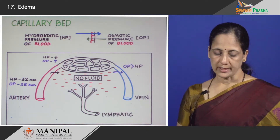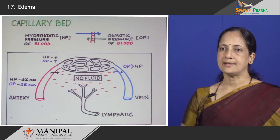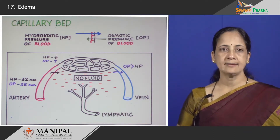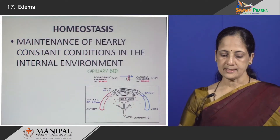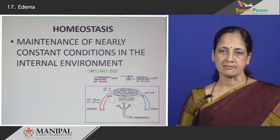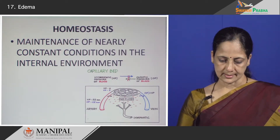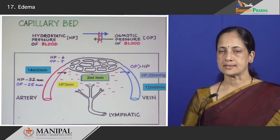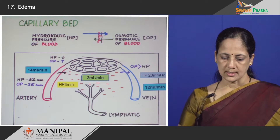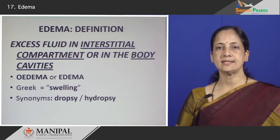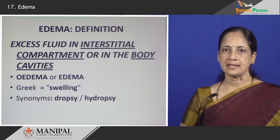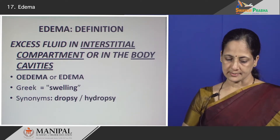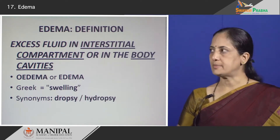So in spite of fluid constantly moving between the compartments, equilibrium is maintained between the intravascular, interstitial, and intracellular compartments — this maintenance of equilibrium in the internal environment is what you learned as homeostasis. How then does an excess of fluid accumulate in the interstitial compartment, and what is it called? This excess of fluid accumulating in the interstitial compartment is known as edema. It can accumulate either in the interstitial compartment or in the body cavities, and it is derived from a Greek word which means swelling.